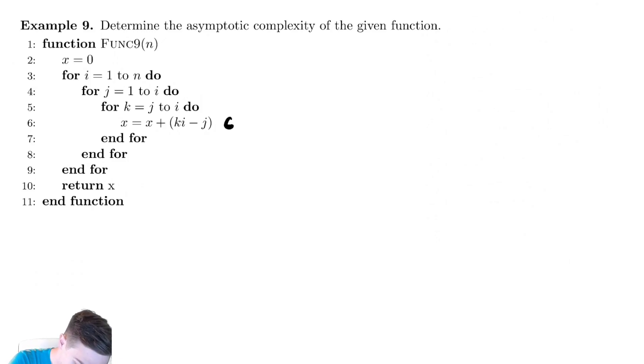So t is equal to, we can express this as three different summations. The sum from i equals 1 to n coming from the outermost loop. The sum from j equals 1 to i coming from the middle loop. And the sum from k equals j to i from the innermost loop. And the cost of one iteration is c.